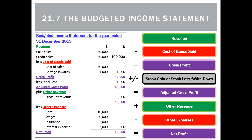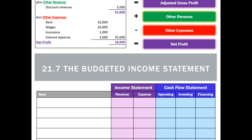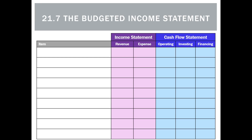The whole key to doing a budgeted income statement is remembering the difference between profit and cash. For every transaction, ask: is it going to be a revenue or an expense, is it going to be an operating, investing, or financing activity, or is it going to be both?